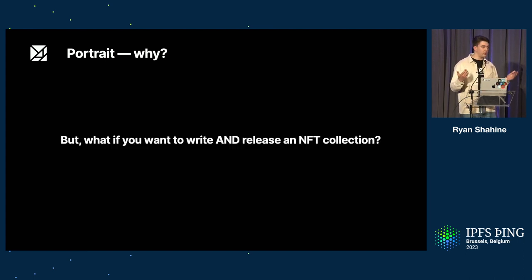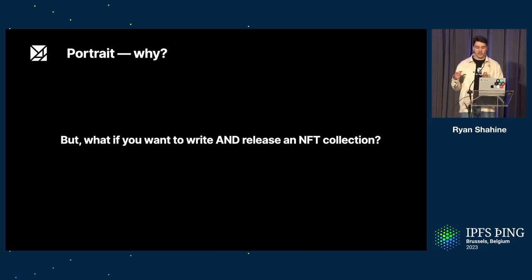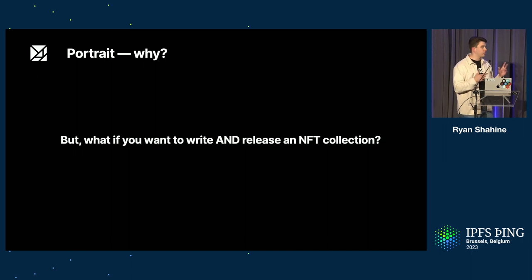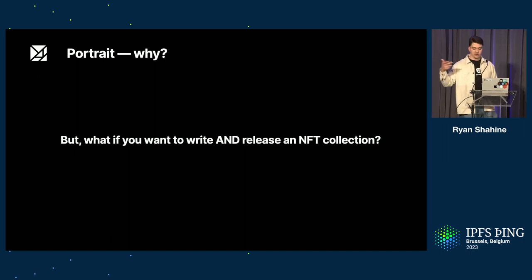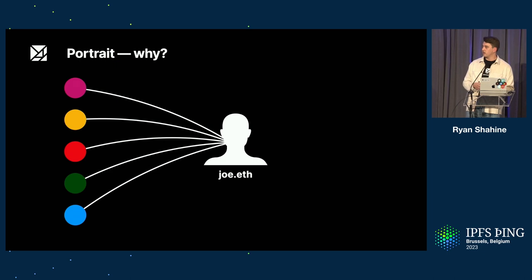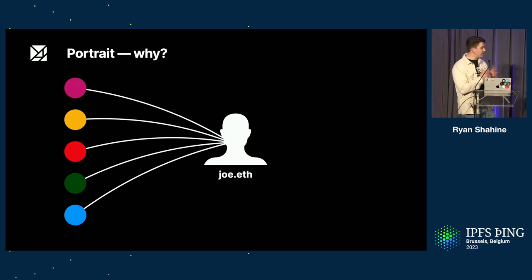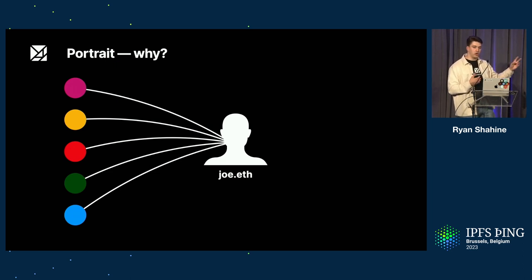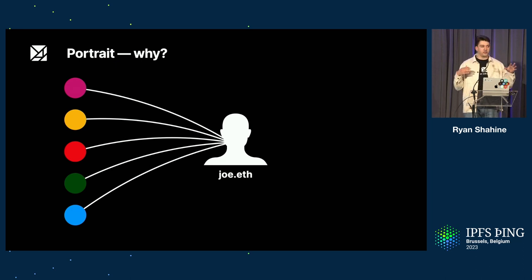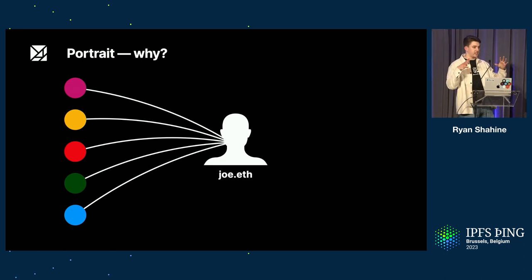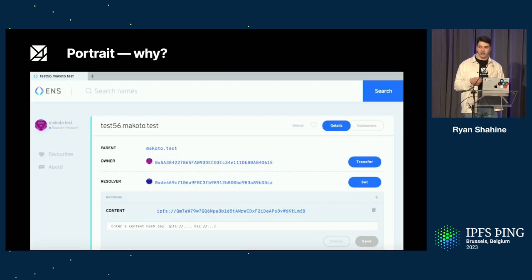But what if you'd like to do both — write your blog and release NFTs? And then add a third, fourth, and fifth thing? For every solution out there, there's a dApp. But at the end of the day, let's take Joe as an example: you have one identity. Joe owns Joe.eth, and Joe doesn't want all his data, creations, and expressions scattered around the web. Because Joe.eth is more than a textual representation of your Ethereum address.